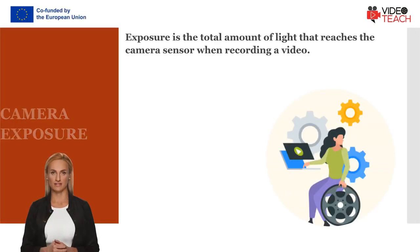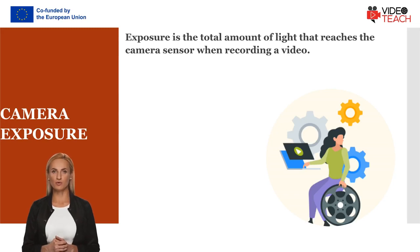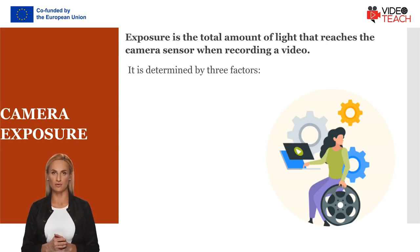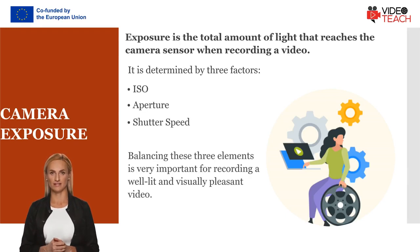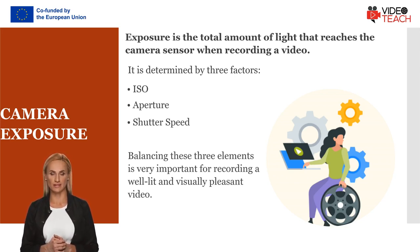Exposure is the total amount of light that reaches the camera sensor when recording a video. It is determined by three factors: ISO, aperture, and shutter speed. Balancing these three elements is very important for recording a well-lit and visually pleasant video — where the picture is not too bright (overexposed) nor too dark (underexposed).